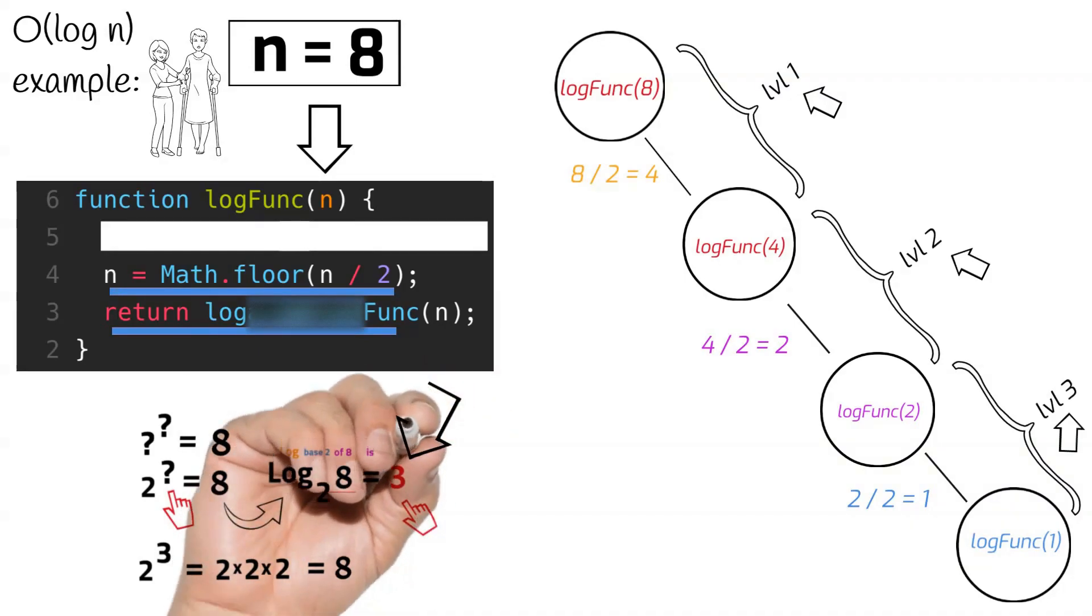If you recall from our previous slide, the log base 2 of 8 is 3. Our input n is 8, and we've gone three levels deep. You will also notice that we have to raise 2 to the power of 3, or multiply 2 times 2 times 2 to get 8.